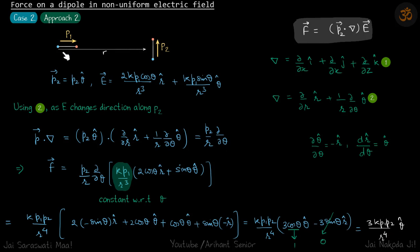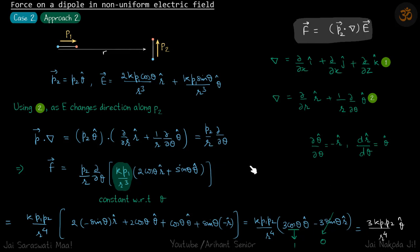To summarize Approach 2: we used polar coordinates because the electric field direction changes as you move along p2. We wrote both p and E in polar forms, computed p·del to get p2/r · ∂/∂θ, substituted the general electric field, obtained a general result, then put in the value of θ to get our specific answer.